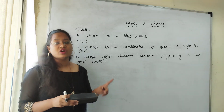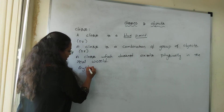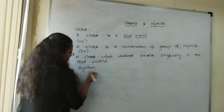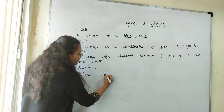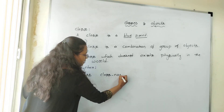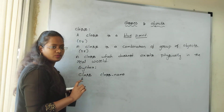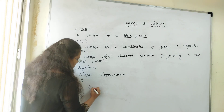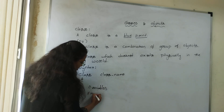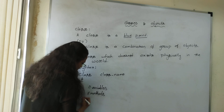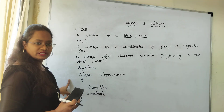A class which does not exist physically in the real world. Let us see the syntax — how we can represent a class. When representing any class, first of all we need to write down the keyword class and then the class name. A class contains variables and methods. This is the syntax to represent a class, and now you know what a class is and how to represent it.